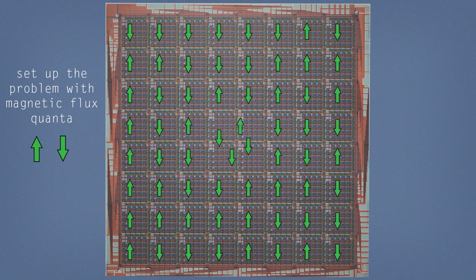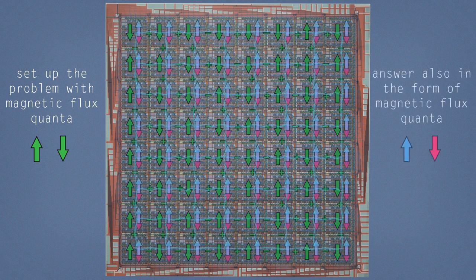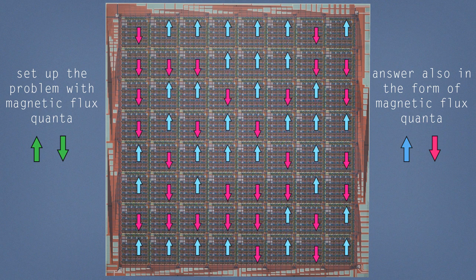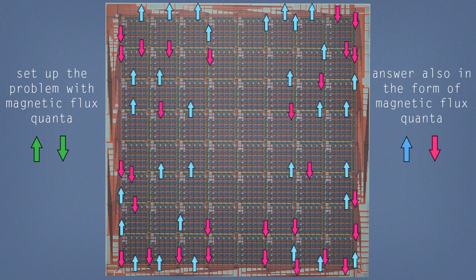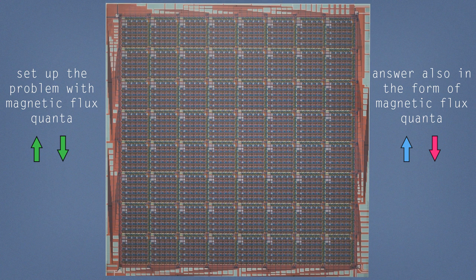Then the processor undergoes this algorithm of quantum annealing which is how it solves the problem that we've posed to it. At the end of that the answer is in the form also of magnetic flux quanta which are then pulled out of the processor to the four corners and then up into the room temperature electronics and onto our conventional computer.